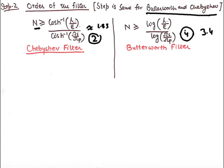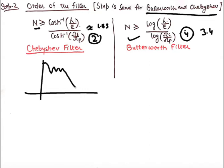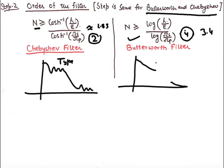The formula for the Butterworth filter order is different from the Chebyshev filter order. In a Chebyshev filter the passband attenuation has a sinusoidal (ripple) drop. Type 1 has a sinusoidal drop only in the passband, and Type 2 has a sinusoidal drop in the stopband. In the Butterworth filter the drop in magnitude is logarithmic, which is why the formula takes a different form.